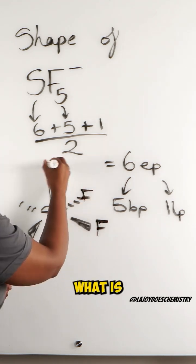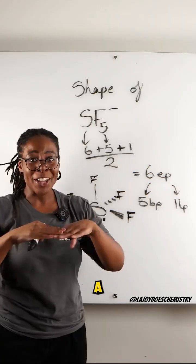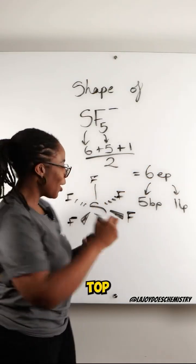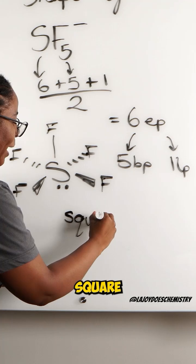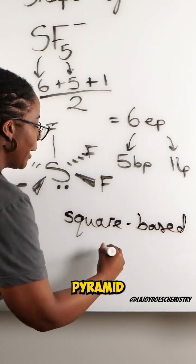So what is the shape of this molecule? Well a square base all pointing up to the top it is of course a square based pyramid.